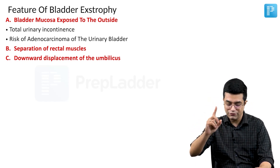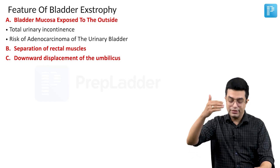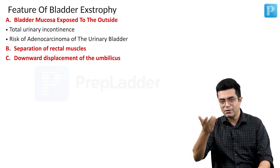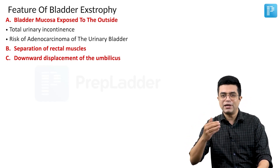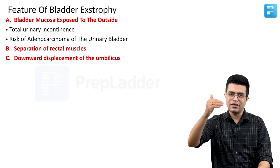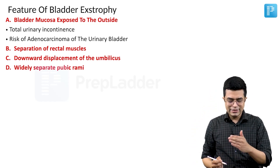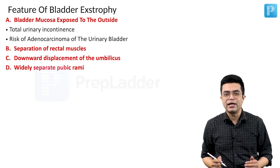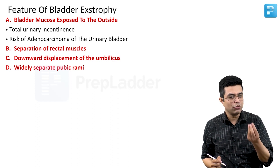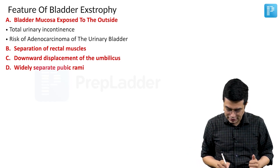Please remember, we are not saying that it will be below the bladder mucosa. It will be above the bladder mucosa, but its normal location is slightly displaced downwards. Then there will be widely separated pubic rami, so the pelvis will be abnormal.